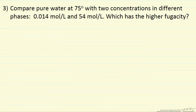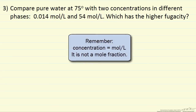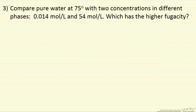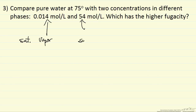In this case, we have pure water at 75°C at two concentrations in different phases, and the question is which one has the higher fugacity. We need more information — we can't tell from concentrations alone. Looking up specific volume in steam tables and taking the inverse to get molar density, we find that one concentration corresponds to saturated vapor at 75°C and the other to saturated liquid at 75°C. Since the fugacity of the liquid equals the fugacity of the vapor in equilibrium, these two concentrations actually have the same fugacity.